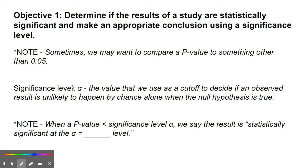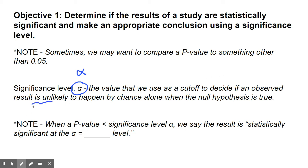In significance test talk, we have what's called the significance level, and this is alpha. Alpha is a Greek symbol. It is the value that we use as a cutoff to decide if an observed value or observed result is unlikely to happen by chance alone when the null is true.